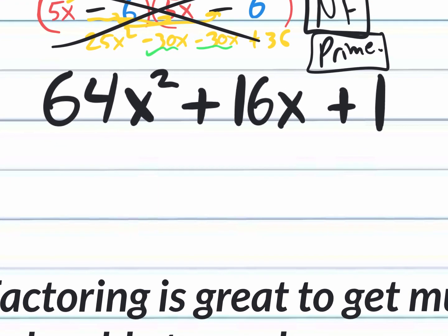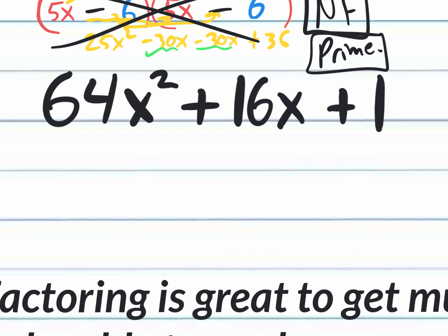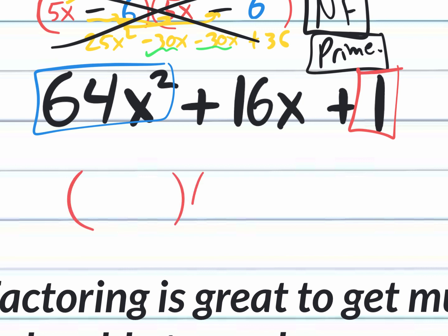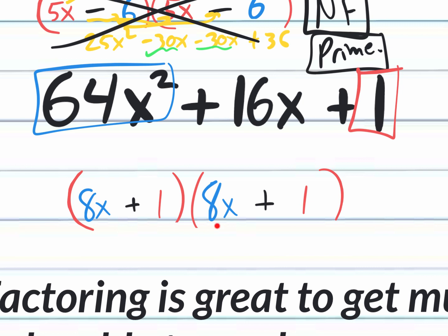Next example: 64x squared plus 16x plus 1. Do we have a perfect square term in the front? Yes. In the back? Yes. Square root of 64x squared is 8x; square root of 1 is 1. Everything is positive, so both signs are plus: (8x plus 1)(8x plus 1). Verification: 8 times 8 is 64x squared; 8x times 1 is 8x; 1 times 8x is another 8x; adding those gives 16x in the middle. Correct!